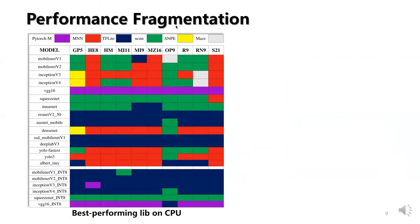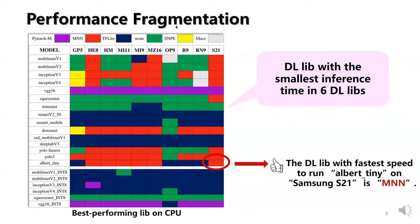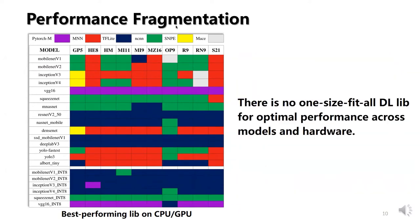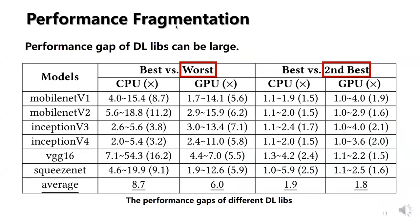I would like to share performance analysis from several aspects. First, we use CPU to understand the libraries' performance. The horizontal axis represents the smartphone, and the vertical axis represents models with different precisions. The colorful block represents the library with the smallest inference time. As shown in the figure, the result shows a lot of fragmentation. Each library has at least one best performance scenario. There is no one-size-fits-all library for optimal performance across models and hardware; CPU and GPU have similar performance patterns.